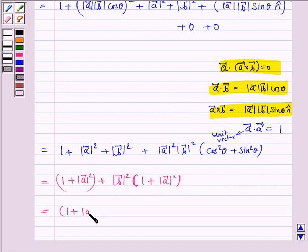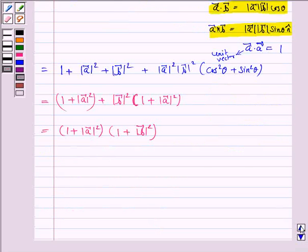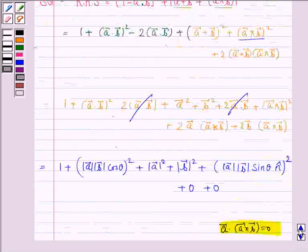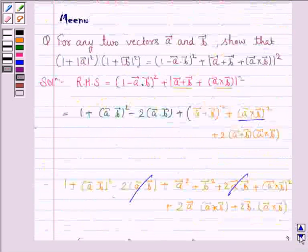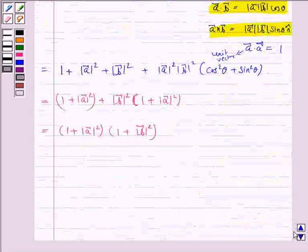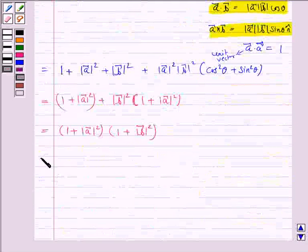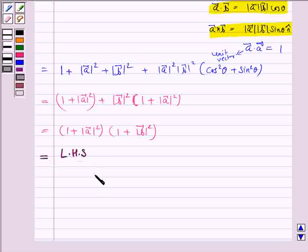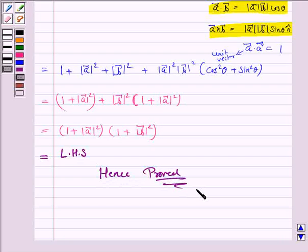So again this is equal to 1 + |A|² + |B|² + |A|²|B|², which factors as (1 + |A|²)(1 + |B|²). Taking (1 + |A|²) common gives (1 + |A|²)(1 + |B|²), and that is exactly the LHS. Hence the result is proved. This completes the question and the session — bye for now, take care, have a good day.